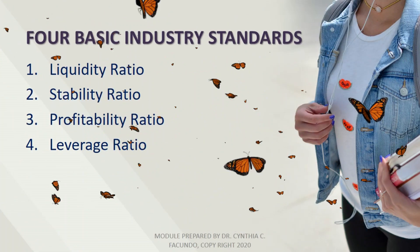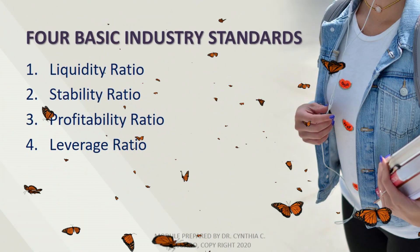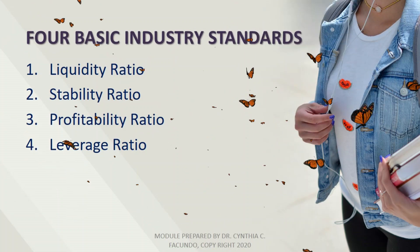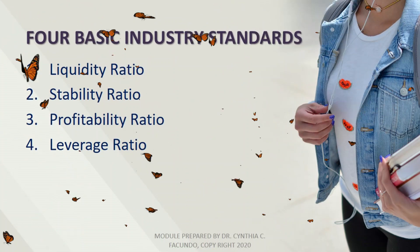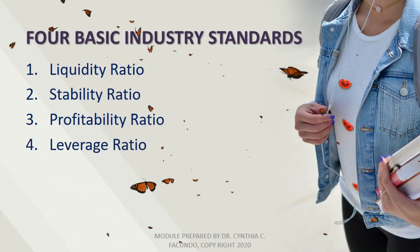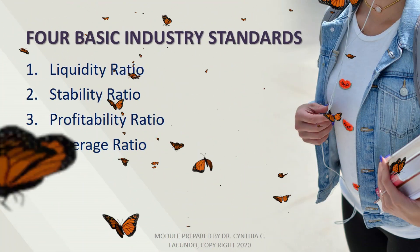The four basic industry standards are: first, liquidity ratio; number two, stability ratio; number three, profitability ratio; and number four, leverage ratio.